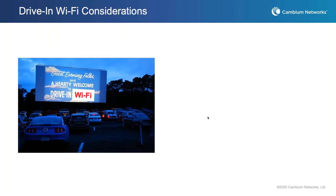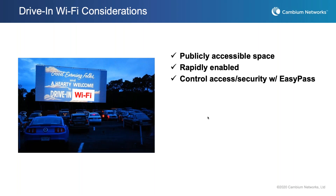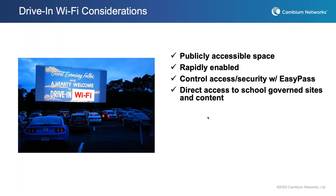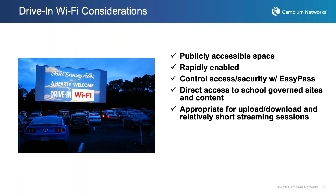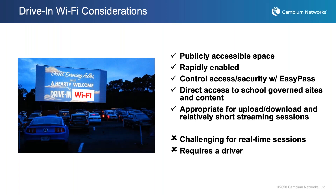For publicly accessible spaces, you can apply your existing controls and policies. At Cambium, we have an EasyPass portal that allows you to set up new portals for guest access, helping to lock down and securely create a connection, especially for temporary deployments. These are the normal considerations if you're not used to providing Wi-Fi in a public area — make sure appropriate controls are in place to govern access and content. One thing to note: this use case works better for uploading or downloading content rather than real-time streaming or live class sessions.